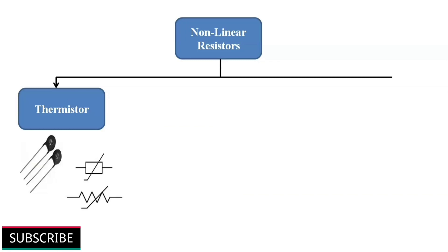There are several types of nonlinear resistors, but most commonly used resistors are, first one thermistors. Thermal means temperature. The resistance varies with a change in temperature. So a thermistor can detect the changes in temperature. Thermistors are used for measurement and control purposes.